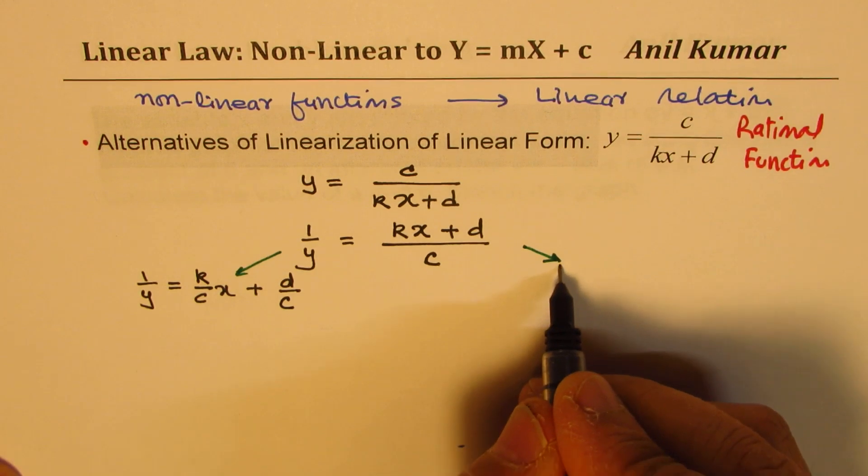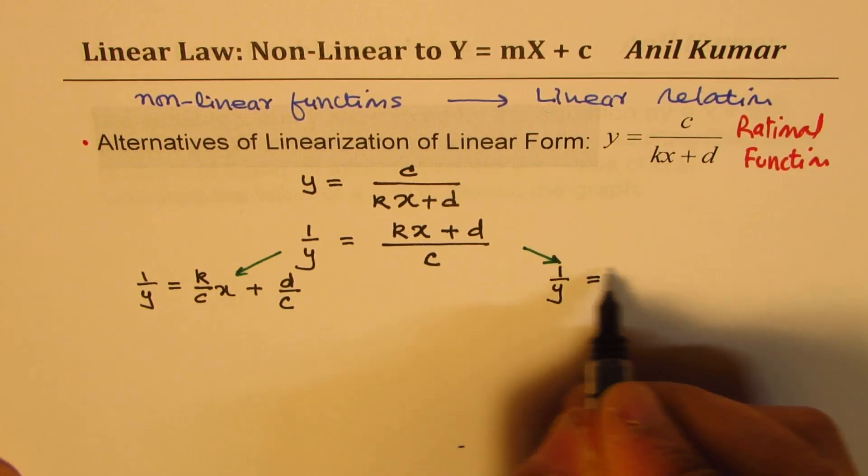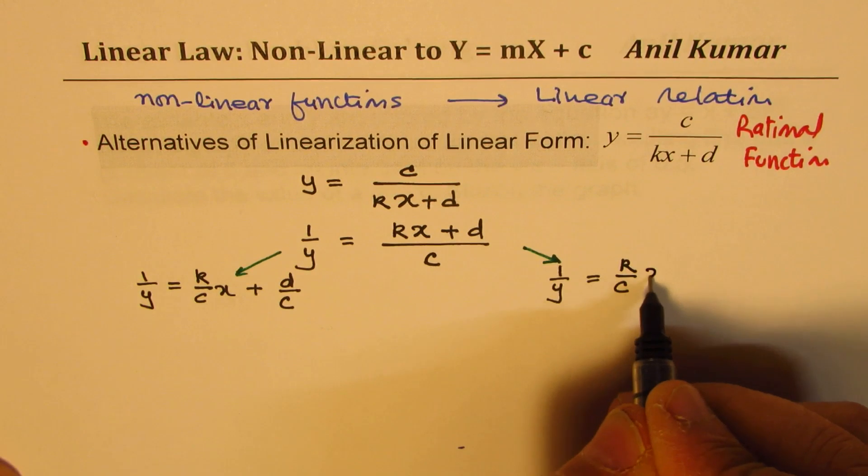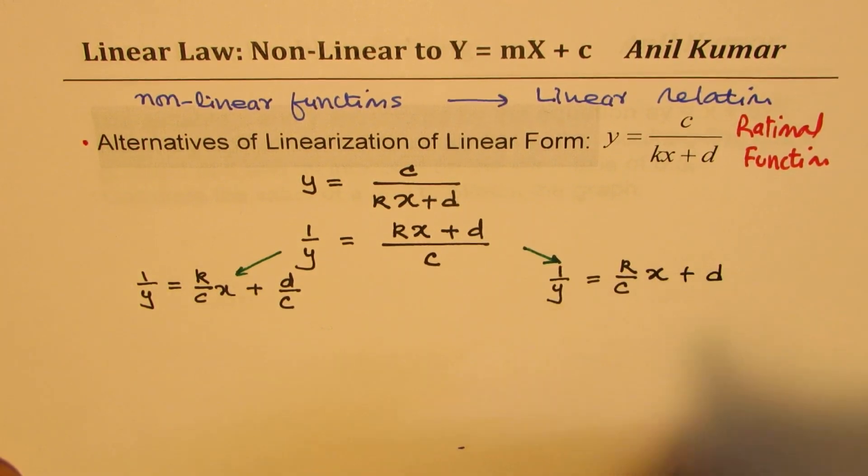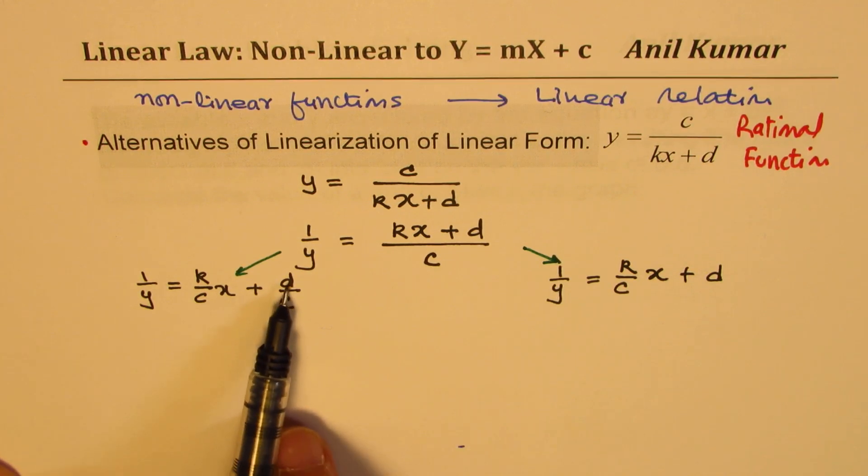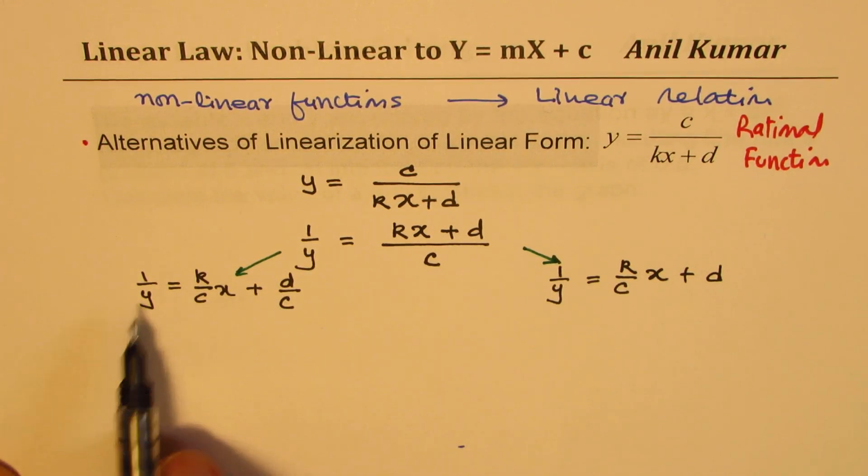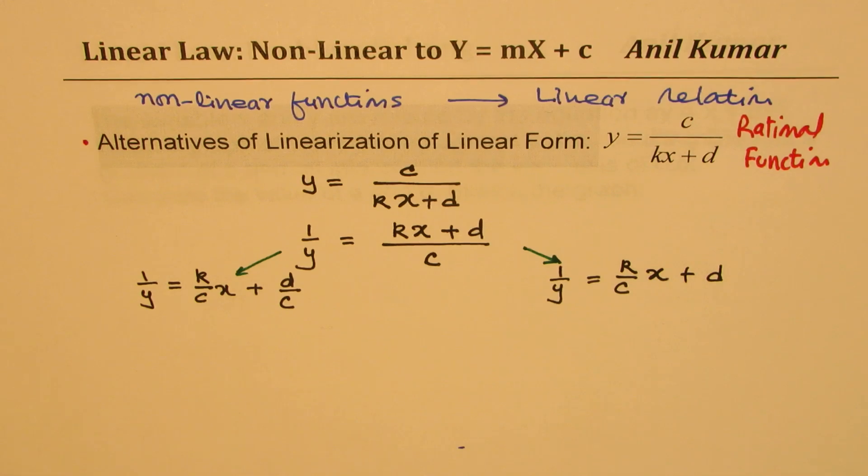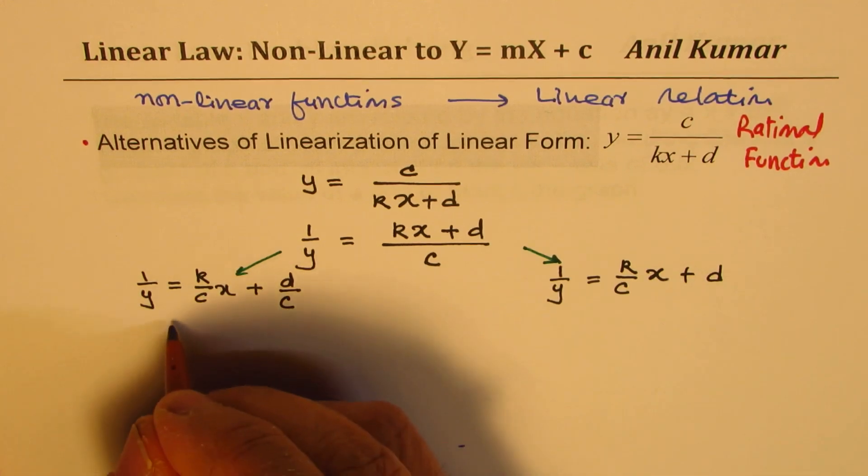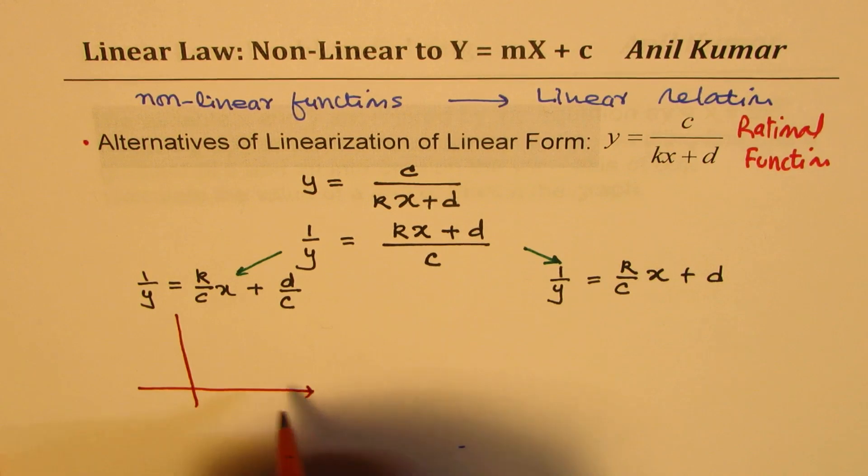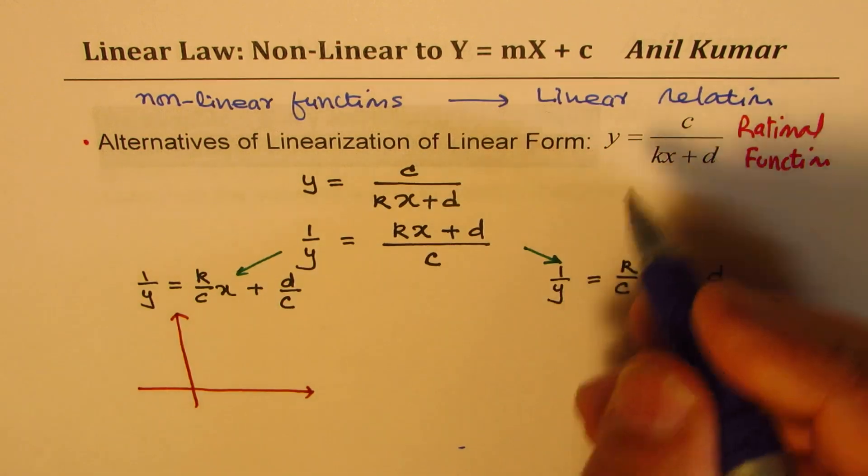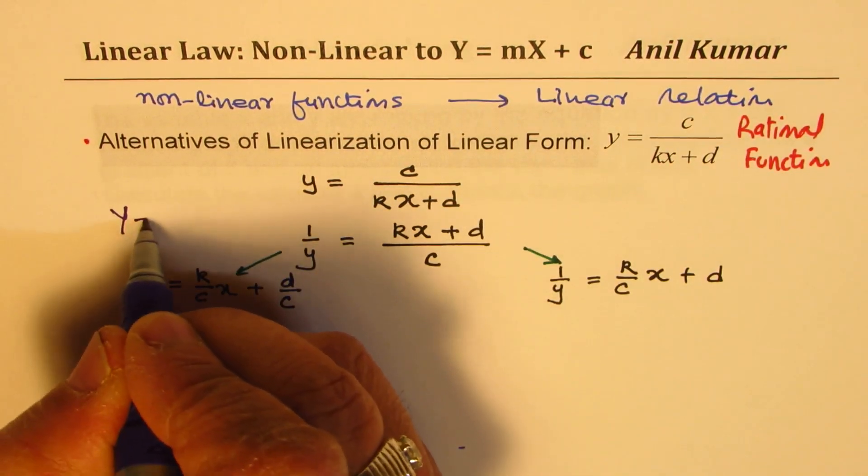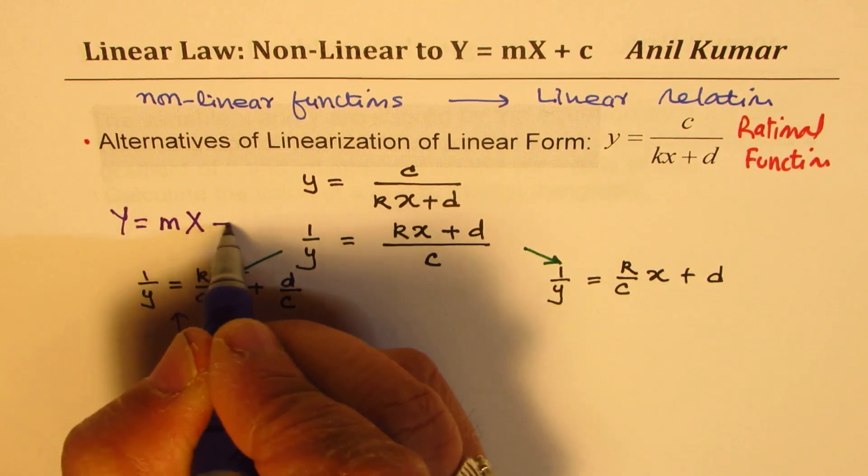We could write this as 1 over y equals to k over c times x plus d over c. The other way is 1 over y equals to - both are the same equations when I'm writing now, but we'll change the form soon. Now, here you see that d over c is a constant. Here we get a y term.